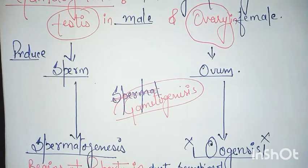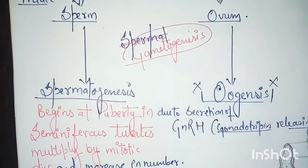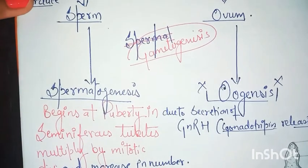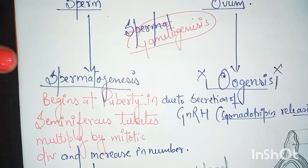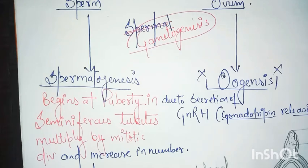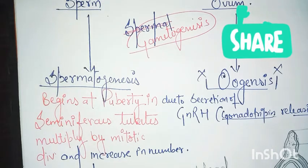This process is jointly called gametogenesis. Let me explain firstly the process - spermatogenesis. Spermatogenesis begins at puberty in seminiferous tubules. Spermatogonia are diploid in number and contain 46 chromosomes due to secretion of GnRH, that is gonadotropin releasing hormones.